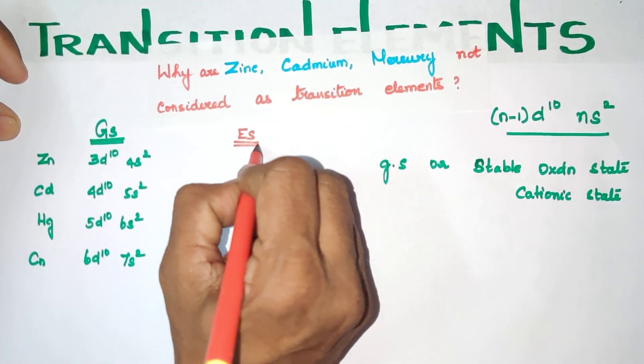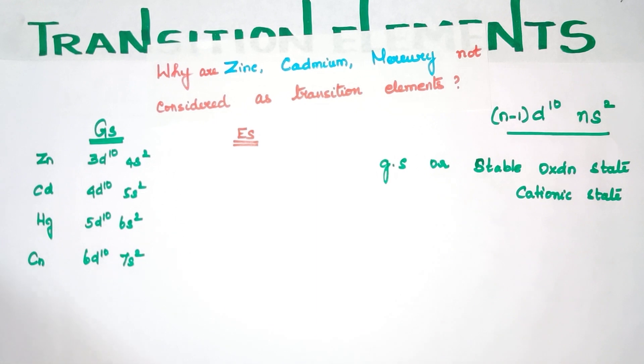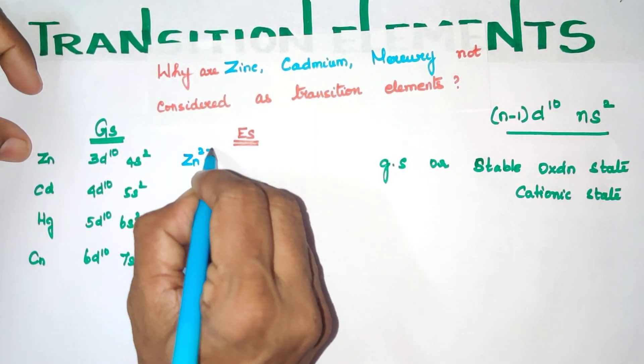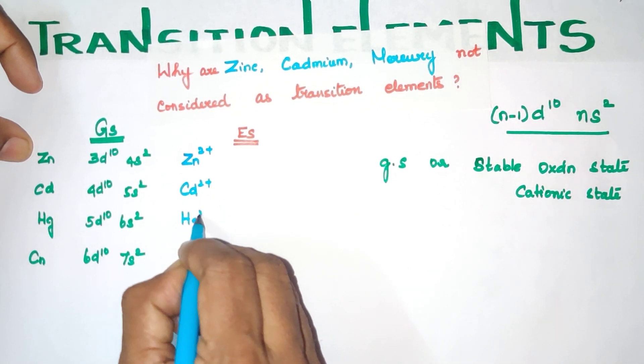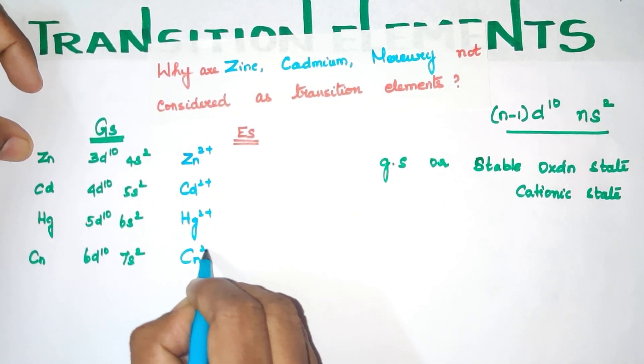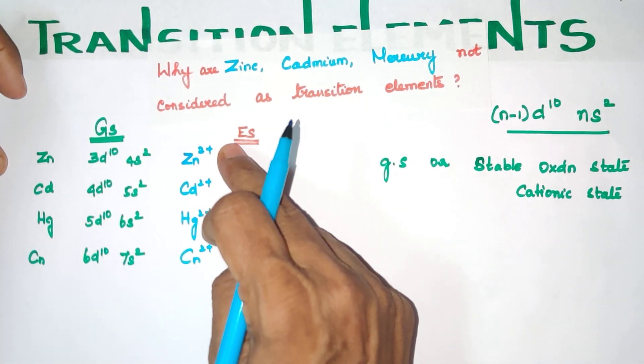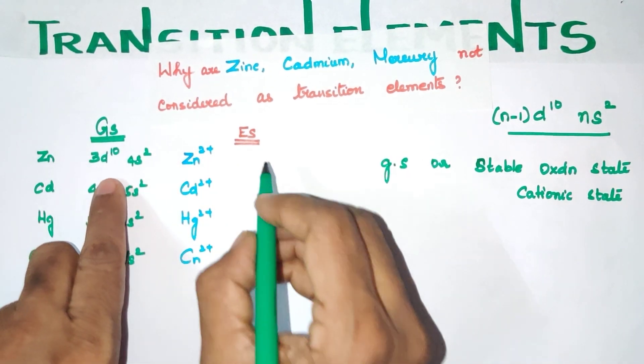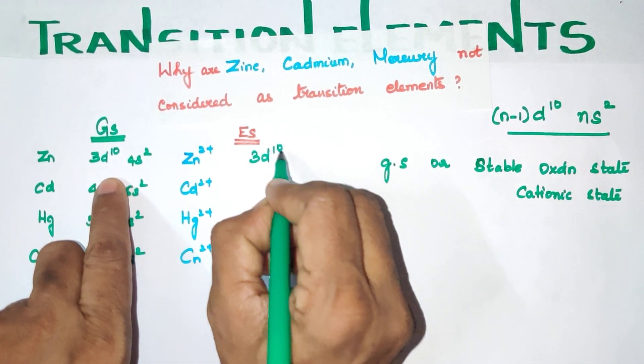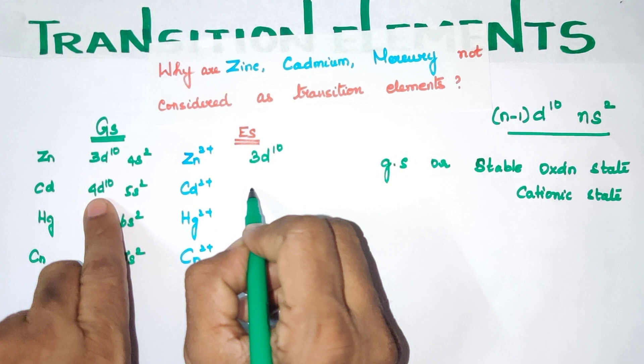Electronic configuration but Zinc 2+ the stable oxidation state, Cadmium Cd2+, Mercury Hg2+, Copernicium 2+, so these are the stable oxidation states of these metals. The electronic configuration is 3d10 4s2, so 2 electrons are removed for 2+, so we will have 3d10 4s0.